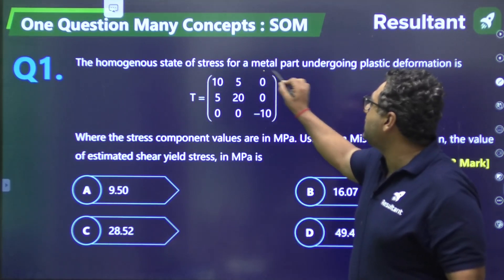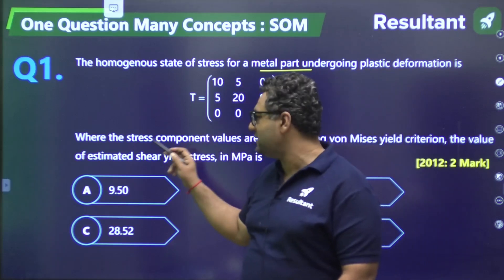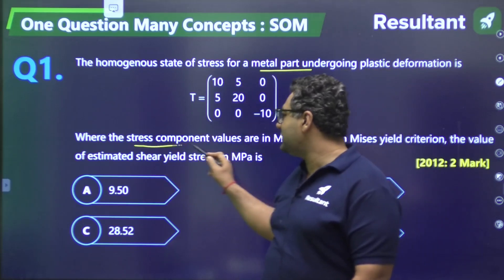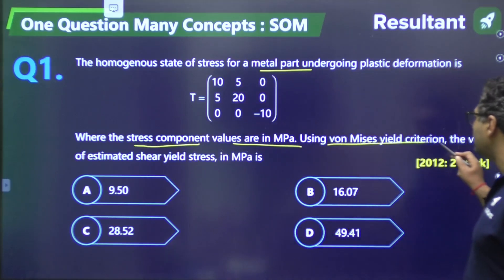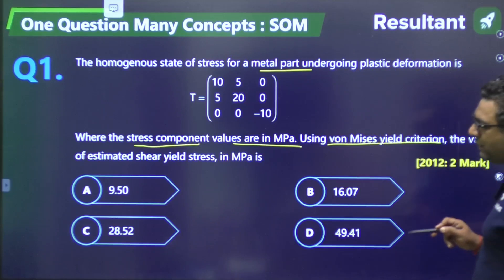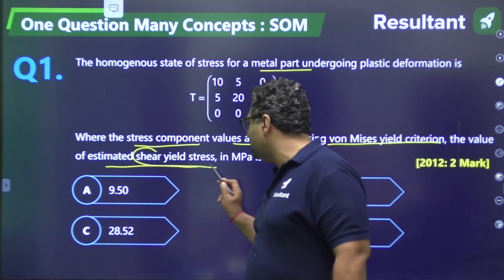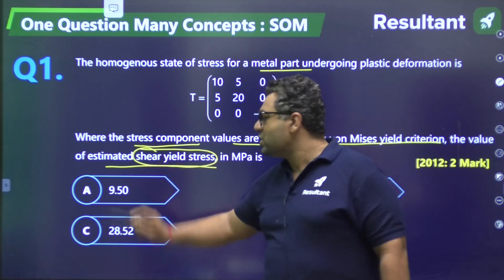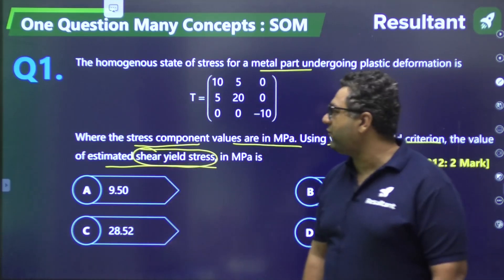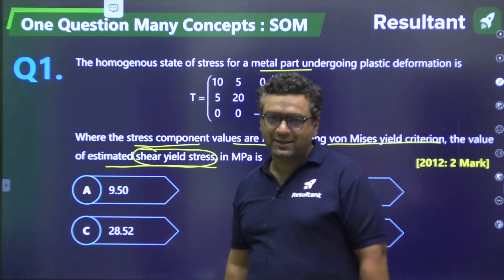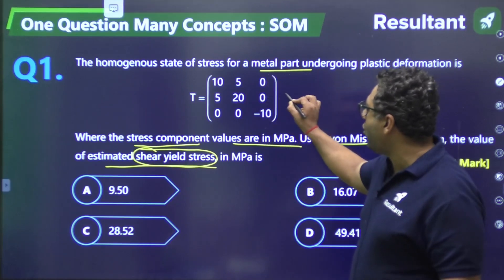The question gives a homogeneous state of stress for a metal part undergoing plastic deformation, provided as a stress tensor with stress component values in MPa. Using Von Mises theory, we have to find the estimated shear yield stress. This question is a perfect combination of many concepts.